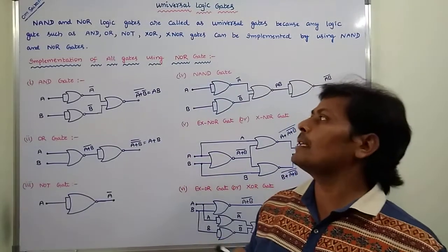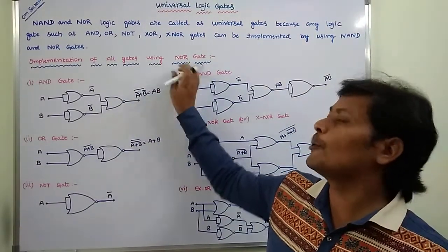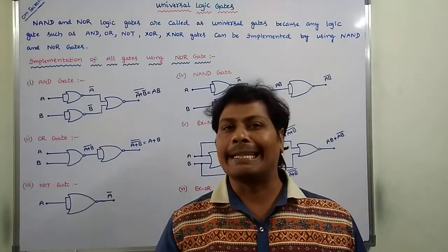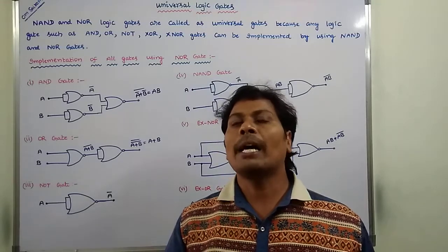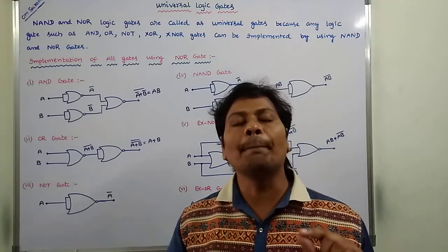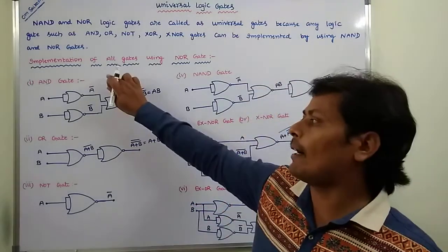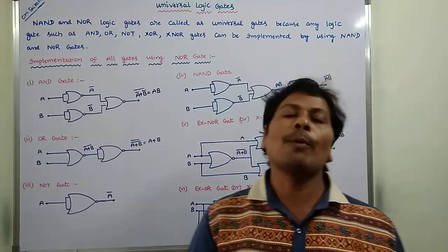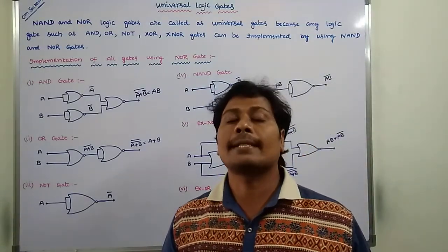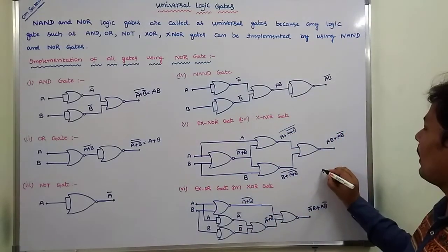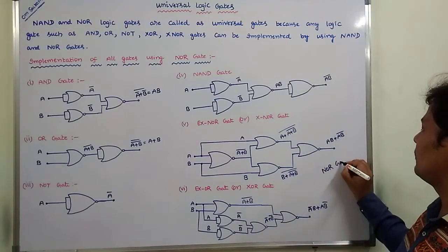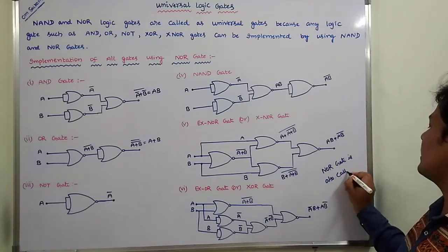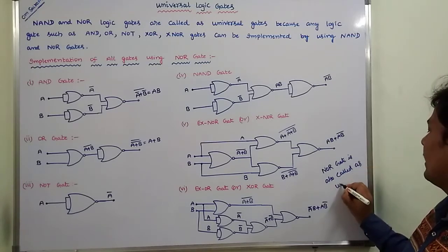Next, implementation of all gates using NOR gate. NOR gate is also called as universal gate because by using NOR gate we have to implement all gates, such as AND gate, OR gate, NOR gate, NAND gate, exclusive NOR gate, exclusive OR gate. Hence, we can say that NOR gate is also called as universal gate.